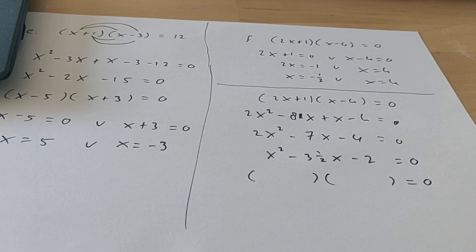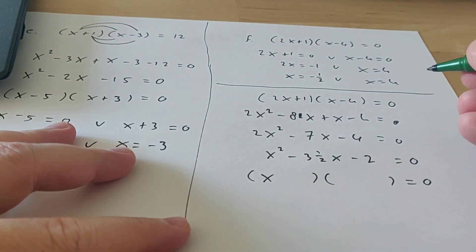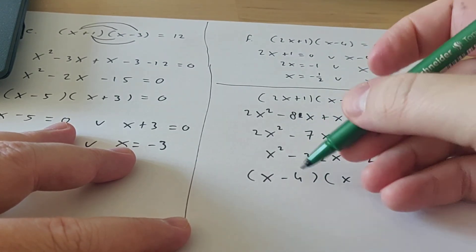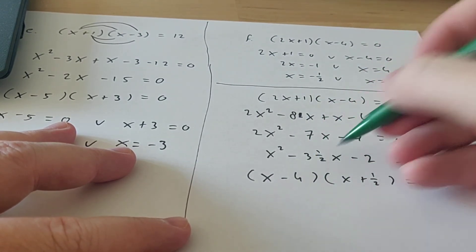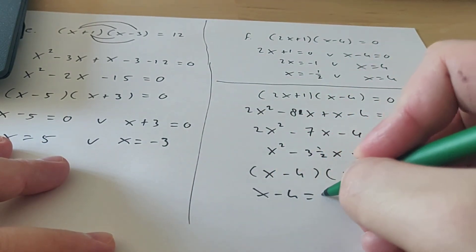Now if someone actually does know how to figure this out, the numbers that you have to have here are minus 4 and a half. Because if you multiply that, you get minus 2. And when you add that, you get minus 3 and a half.